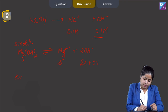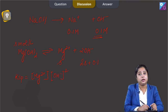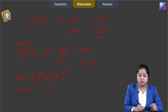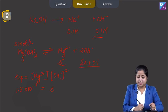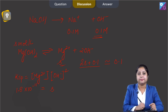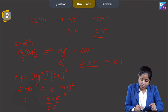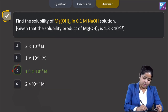Ksp = [Mg²⁺][OH⁻]². Substituting: 1.8 × 10⁻¹¹ = S × (2S + 0.1)². Since S is very small compared to 0.1, we approximate 2S + 0.1 ≈ 0.1. So: S = 1.8 × 10⁻¹¹ / (0.1)² = 1.8 × 10⁻¹¹ / 0.01 = 1.8 × 10⁻⁹ mol/L. The correct answer is option C.